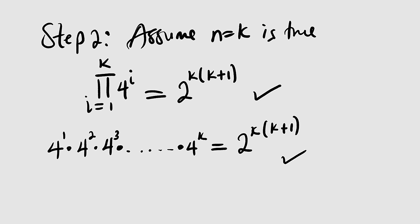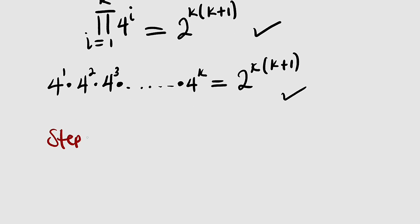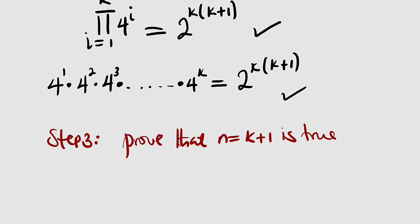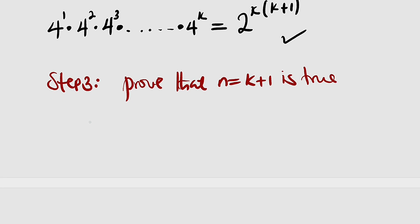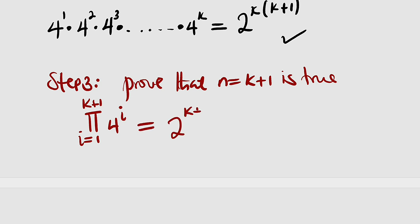In the last step, we are going to prove that n equal to k plus 1 is also true. For instance, if k is 4, then 5 will be true because 4 plus 1 is 5. So we want to prove that n equal to k plus 1 is true. The left hand side will be the product i from 1 to k plus 1 of 4 to the power of i, and the right hand side will be 2 to the power of k plus 1 multiplied by k plus 2.